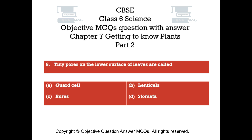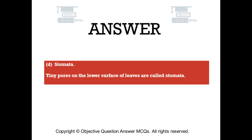Question number eight. Tiny pores on the lower surface of leaves are called: Option A guard cell. Option B lenticel cells. Option C bores. Option D stomata. The right answer is option D — stomata. Tiny pores on the lower surface of leaves are called stomata.